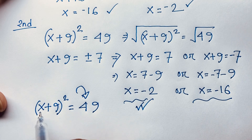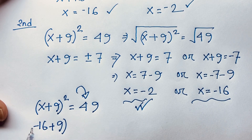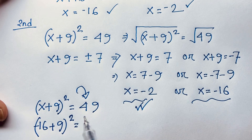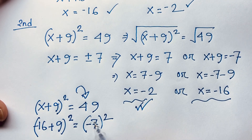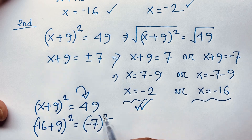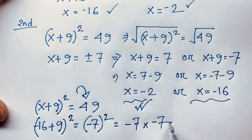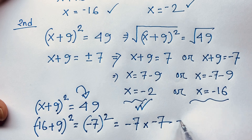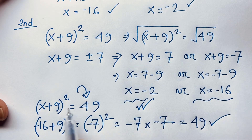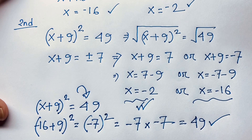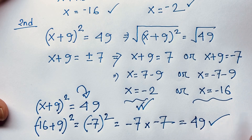Now if x equals negative 16: negative 16 plus 9, all to the power 2, is negative 7 to the power 2. That is negative 7 times negative 7 — minus times minus gives plus — so 7 times 7 is 49. Left hand side and right hand side are also equal, so both are real solutions.